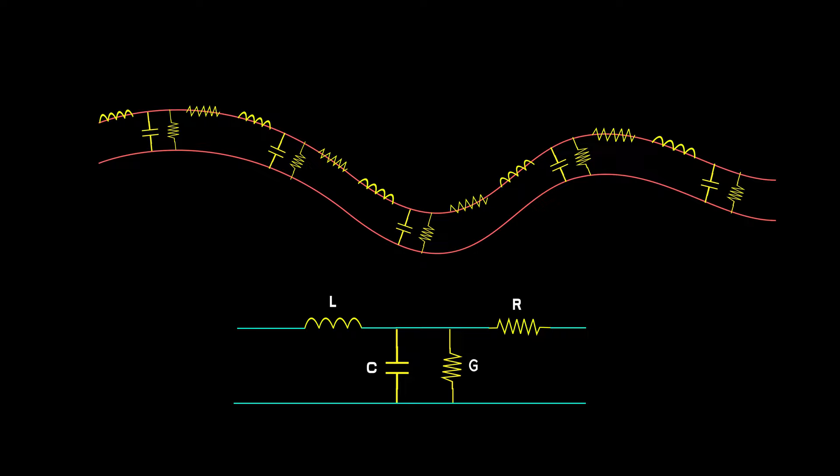Using the lumped element model here gives us a completely wrong answer. Even at very low frequencies, the large series inductance would act as an open circuit, whereas the large shunt capacitance would make the wire a short circuit. For the lumped element model to be valid, the signal wavelength must be very large compared to the circuit element.